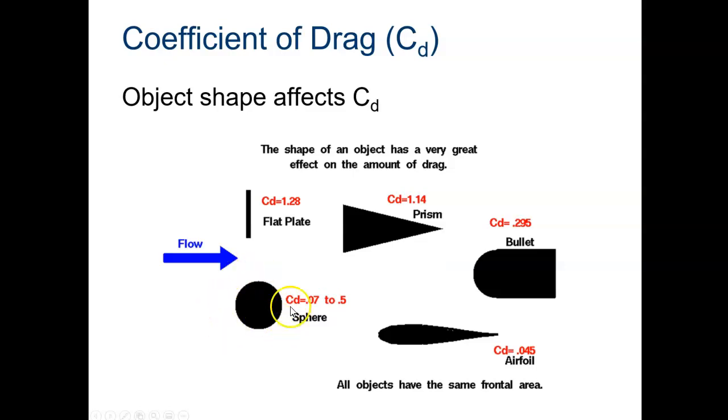And then finally, if we take that sphere and stretch it out and put a point at the end to keep the flow nice and attached and laminar, we get an airfoil. This is not representative of all airfoils, this is just an example. The CD is a pretty small number. You remember from lift, in our example we had 1.19. You want your drag coefficient to be low.